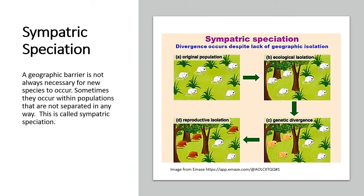We also have sympatric speciation, which simply means you don't need a geographical barrier for new species to occur — it happens within the populations where they already exist. For example, if you have rabbits and there is a selection pressure where predators are pursuing the white rabbits and can see them clearly, there might be the development of a new allele that helps camouflage certain groups of rabbits, making brown rabbits that are more likely to survive.